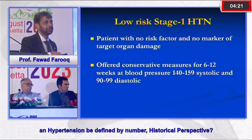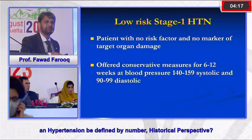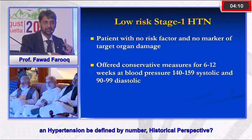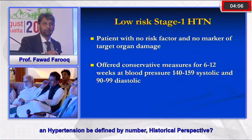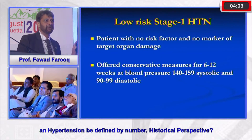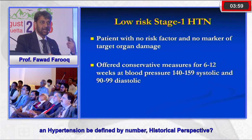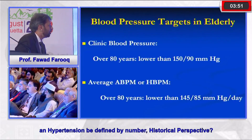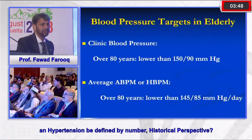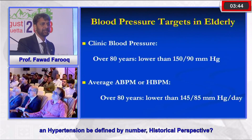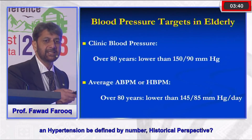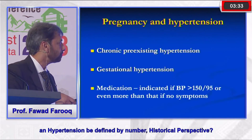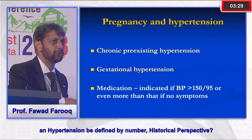Even the latest guidelines permit higher targets in some situations. For a patient presenting for the first time with blood pressure above 140/90, there is no need to start drug treatment immediately — you have the liberty to validate over the next 6 to 12 weeks with conservative measures. For elderly patients with low risk, aggressive treatment may cause harm due to autonomic neuropathies, and many latest guidelines recommend against treating elderly patients too strictly.